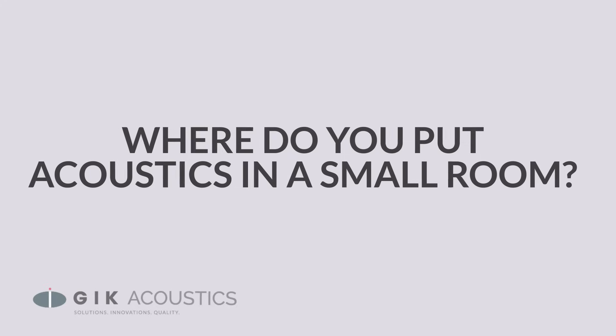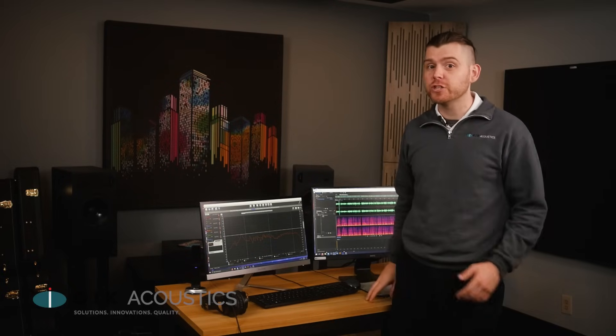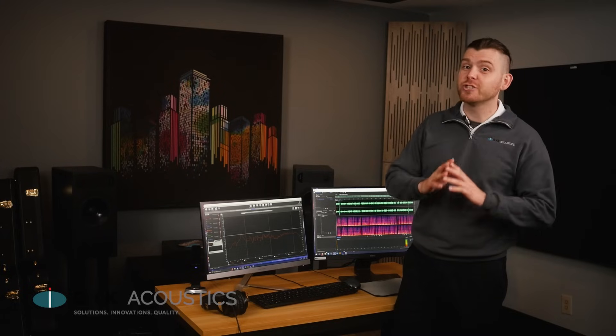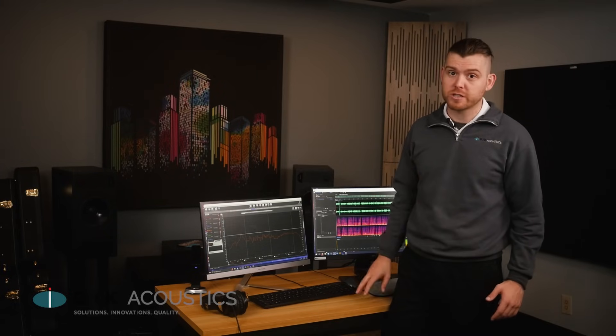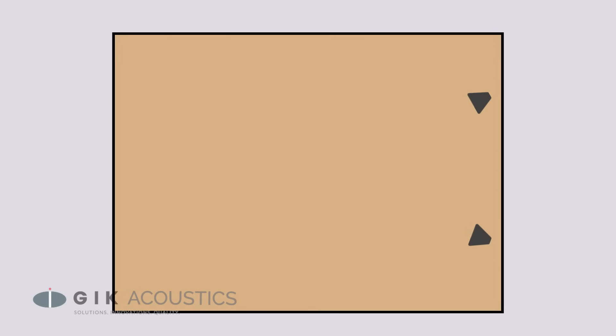Where do you put acoustics in a small room? In a small room, it's even more imperative that you find the best listening position and speaker placement. The frequency response can change drastically based on small changes to where you place your speakers and workstation. So make sure you experiment and test with a variety of layouts. You'll probably get the best results with your speakers close to the front wall and your listening position about roughly one third of the way from that wall.